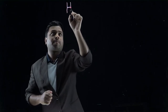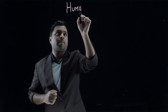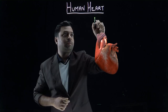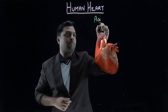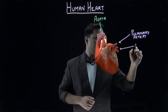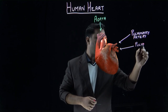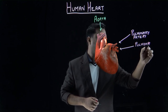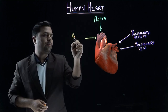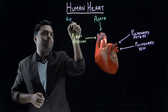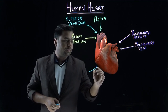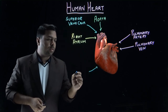The human heart. Let's see the human heart. This is the pulmonary vein at this point. This one is the inferior vena cava.